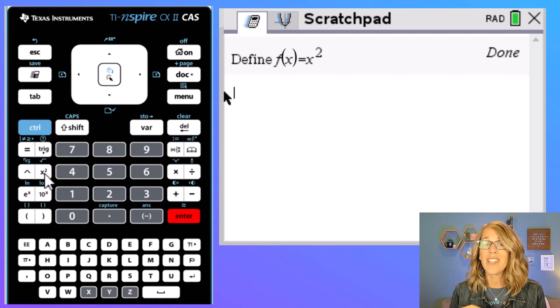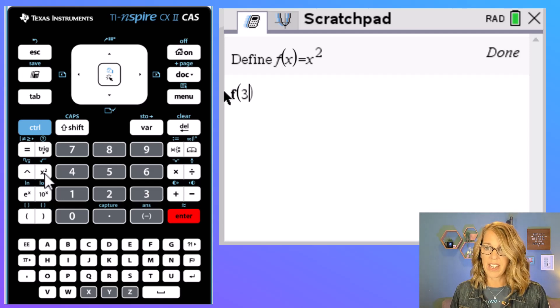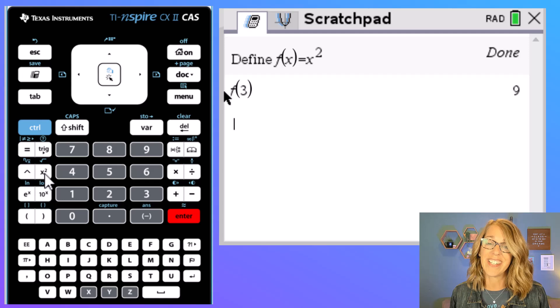But this means that I can now use that function to evaluate, say, what is f of 3. Let's see that should be 3 squared. If I hit enter sure enough we get 9.